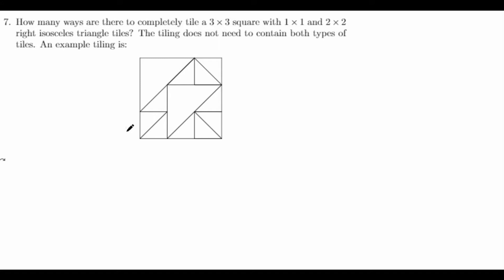How many ways are there to completely tile a 3×3 square with 1×1 and 2×2 right isosceles triangle tiles? Basically, a 1×1 right isosceles triangle tile is half of a 1×1 square, and the 2×2 is half of a 2×2 square. So how can we tile these onto a 3×3 square? Doing casework in a naive way seems totally impossible, because it doesn't seem like there's any sort of nice way to do this.